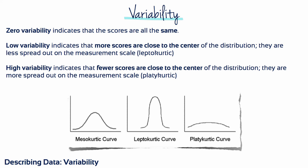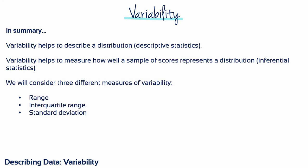In simple terms, if the scores in a distribution are all the same, then there is no variability. If there are small differences between scores, then the variability is small. And if there are large differences between scores, then the variability is large. In this module, we consider three different measures of variability: the range, the interquartile range, and the standard deviation. Of these three, the standard deviation is by far the most important.